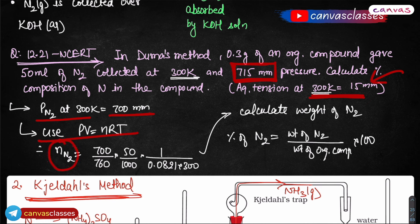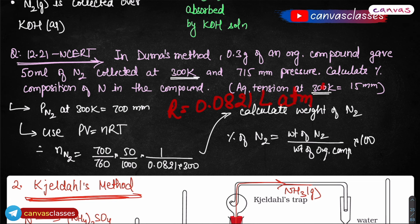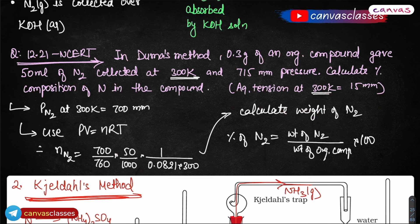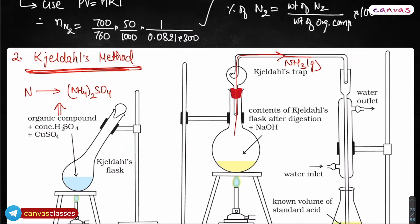Use PV = nRT. We convert pressure to atmospheres because R = 0.0821 L·atm·mol⁻¹·K⁻¹, so we divide 700 by 760. Volume must be in litres, so divide 50 mL by 1000. Then use the remaining data. From this you calculate the weight of N₂, divide by the weight of the organic compound (0.3 g) and multiply by 100 to get the percentage of nitrogen. That is the Dumas method.